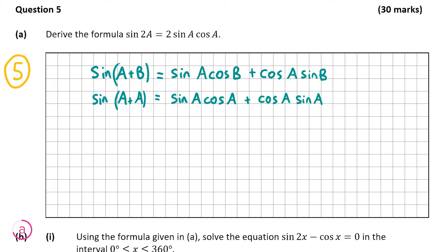We know that a plus a is going to give us 2a, so that means sine 2a is equal to sine a cos a plus cos a sine a. However, sine a cos a is the same as cos a sine a, so that means it's equal to 2 sine a cos a. So there we have it — we've derived the formula that sine 2a is equal to 2 sine a cos a. That's the answer for part A.